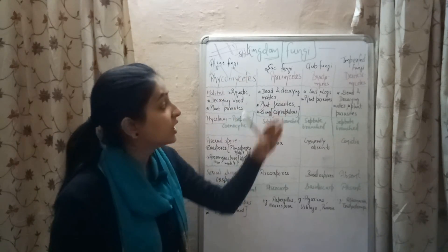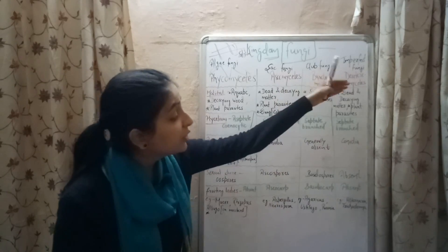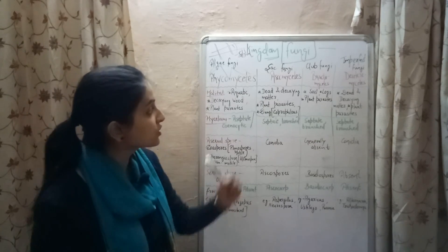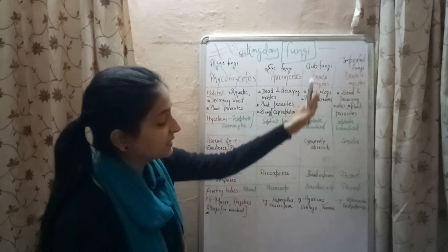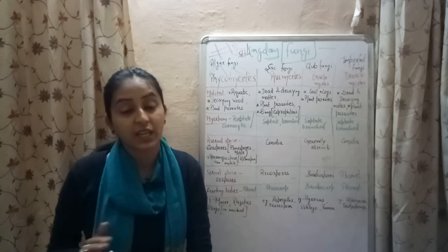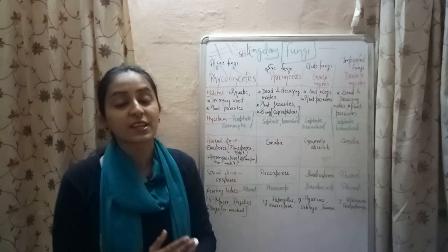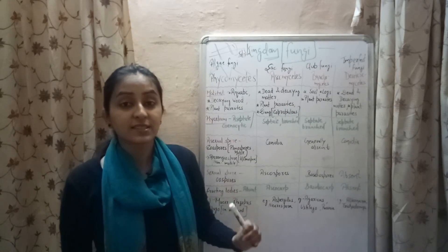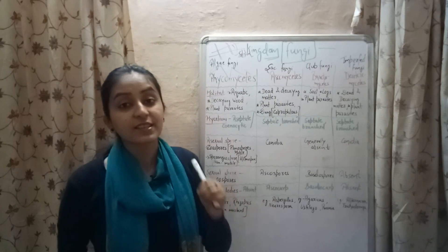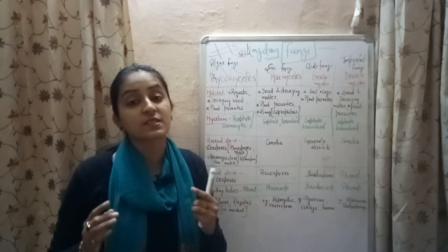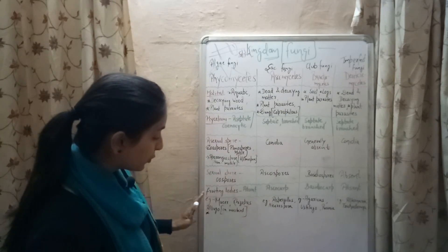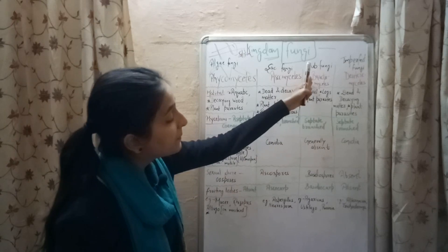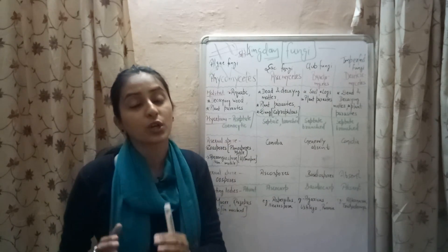Ascomycetes में conidia act as asexual spores. Basidiomycetes में asexual spores generally absent होते हैं. Deuteromycetes में conidia are the asexual spores. Sexual spores की बात करें: Phycomycetes में oospores are the sexual spores, Ascomycetes में ascospores होते हैं, Basidiomycetes में basidiospores होते हैं, और Deuteromycetes में sexual spores absent होते हैं. Because of the absence of sexual spores in Deuteromycetes, this class is also known as imperfect fungi. Fruiting bodies: absent in Phycomycetes, called ascocarp in Ascomycetes, basidiocarp in Basidiomycetes, and absent in Deuteromycetes.